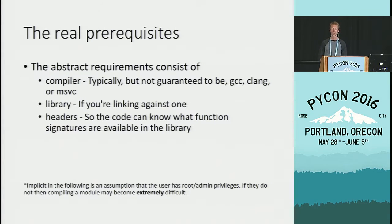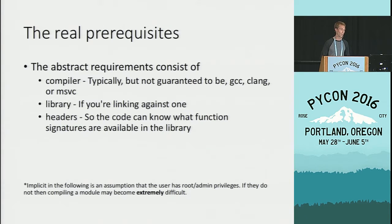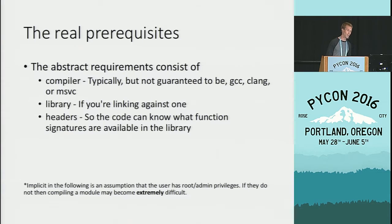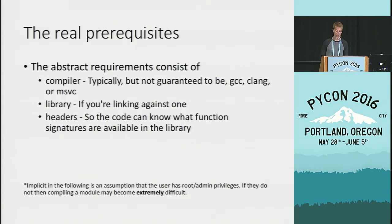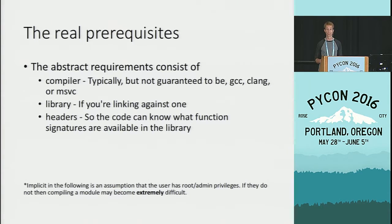What are the real prerequisites? In the abstract, you're going to need a compiler — typically GCC, Clang, or on Windows MSVC or occasionally MinGW. You'll need libraries if you're going to link against one, and headers so the code can know what function signatures are available. Implicit in the following slides is an assumption the user has root or admin privileges. If they do not, compiling a module may become extremely difficult.